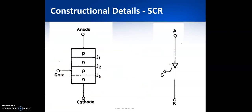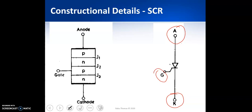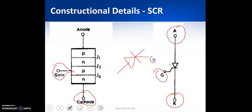Now we will see the symbolic representation of a thyristor. It has an anode, a cathode, and a gate. The gate is a p-type terminal nearer to the cathode, which is why the gate symbol is shown close to the cathode side. The basic symbol is like a p-n junction diode with a gate signal. In the next session, we will see the static characteristics of this device — how it behaves during forward biased, reverse biased, and gate signal applied conditions.